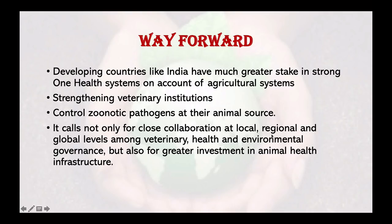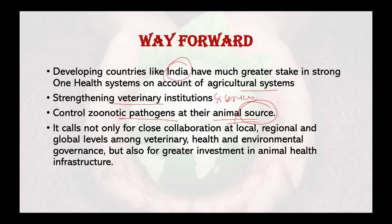The way forward: developing countries like India have a much greater stake in strong One Health systems, given agricultural systems that place animals and humans in uncomfortably close proximity. This builds a strong case for strengthening veterinary institutions and services. The most effective and economical approach is to control zoonotic pathogens at their source, requiring collaboration at local, regional, and global levels, along with greater investment in animal health infrastructure. If animal health is good, the environment will be healthy and human health will follow.